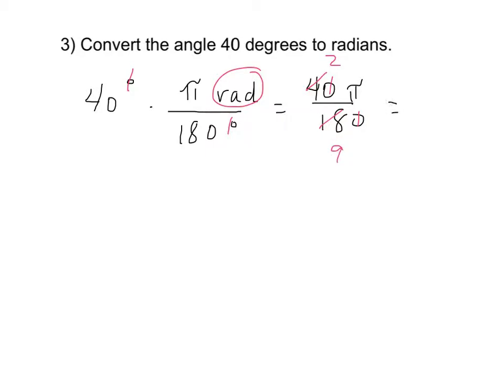And so after reducing, I end up with 2 pi over 9 radians as my solution. Good job.